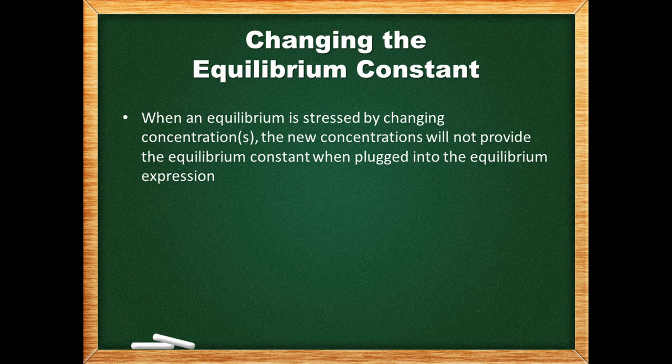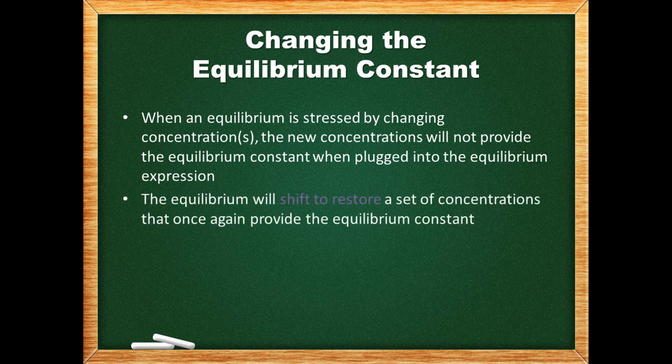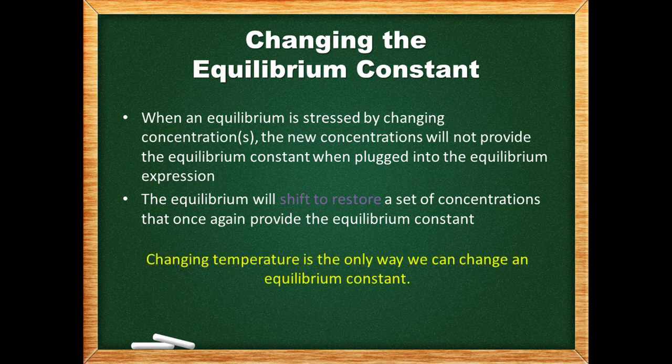How about changing the equilibrium constant? If we stress the system by changing any of the concentrations, the new concentrations will not provide the equilibrium constant when plugged into the equilibrium expression. The reaction will shift to restore a set of concentrations that once again provide the equilibrium constant. However, a shift caused by a change in temperature will increase the product concentrations and decrease the reactant concentrations, or vice versa. Therefore, changing temperature is the only way we can change an equilibrium constant.